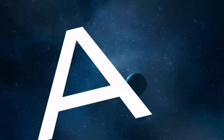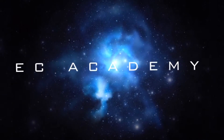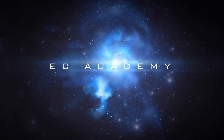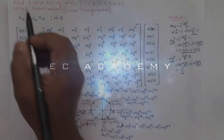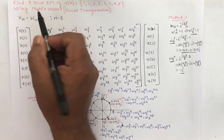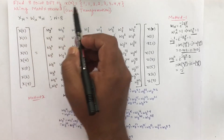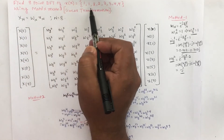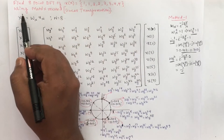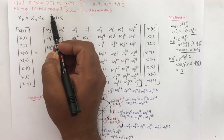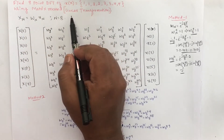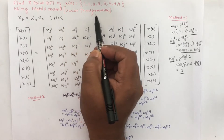Hello friends, welcome to ESEA Academy. In this lecture, let us understand how to find 8-point DFT of a given sequence using matrix method, which is the same as linear transformation.